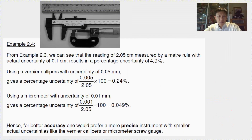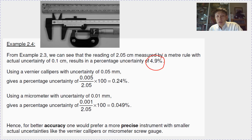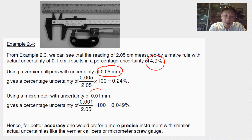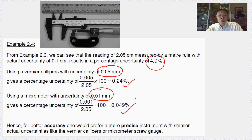From example 2.3, using a meter rule gives 4.9 percent uncertainty. To achieve better accuracy, we use a more precise instrument so that the percentage uncertainty is smaller. For example, using a vernier caliper or micrometer screw gauge to measure this length would give a smaller fractional percentage uncertainty, making it a more accurate choice.